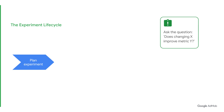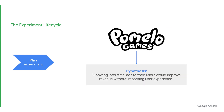The experiment lifecycle consists of the following steps. Number one, plan your experiment by formalizing your hypothesis. A great example would be Pomelo Games. They wanted to see if they could increase the profitability of their game. Their hypothesis was that showing interstitial ads to their users would improve their revenue without impacting their user experience. When designing your own A-B test, you'll also want to make sure you can form a hypothesis that one variant could outperform another.